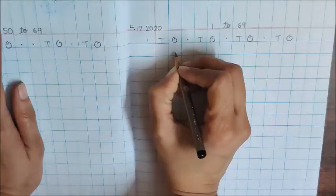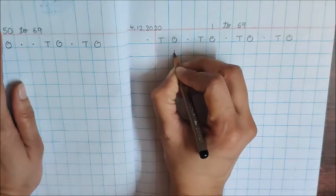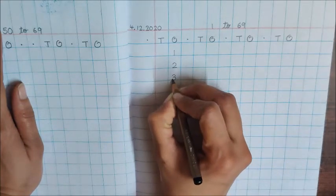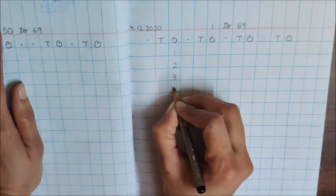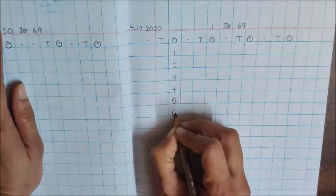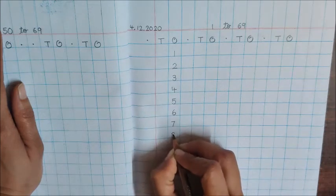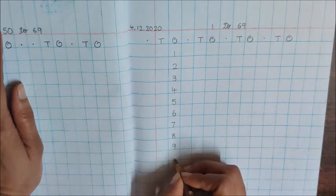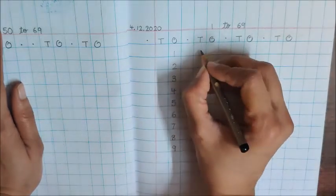Children, say and write 1, 2, 3, 4, 5, 6, 7, 8, 9. Where will number 10 go? To the new house.